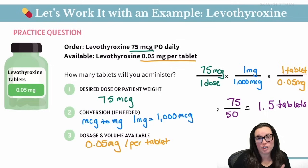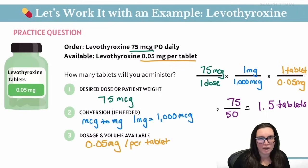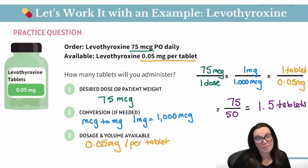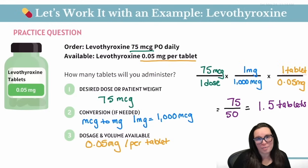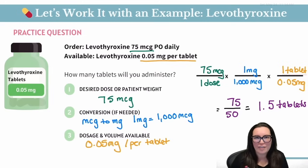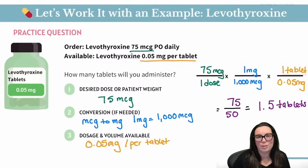It's really important to note that anytime we have a half tablet rather than a whole number, we want to make sure the medication is scored so that we're able to give it in that half formulation. If it's not, we need to reach out to the provider, have a conversation, and maybe seek other kinds of medication types or dosages in order to get the patient their medication safely.